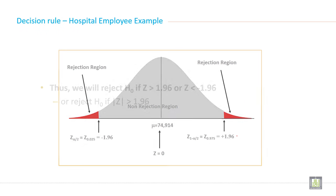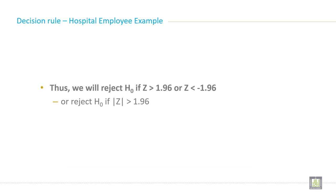So your decision rule will be we will reject null hypothesis if z is greater than 1.96 or z is less than minus 1.96.